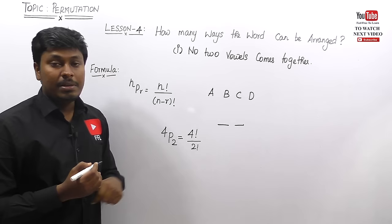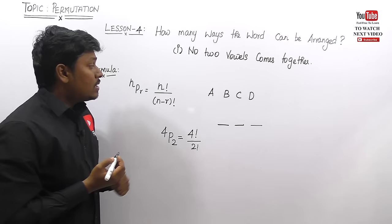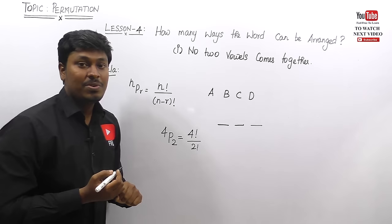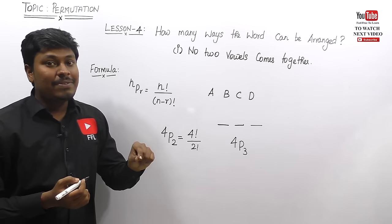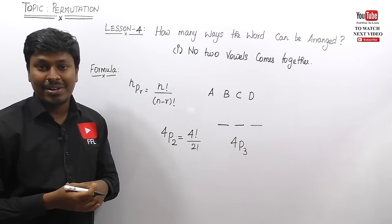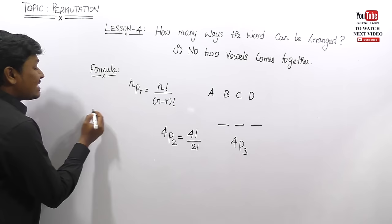There are four letters and three places. How many ways can four letters be placed in three places? We write this as 4P3, since the total number of letters is four and there are three places. This equals 4 factorial divided by (4 minus 3) factorial, which is 1 factorial. So the answer is 4 factorial divided by 1 factorial.